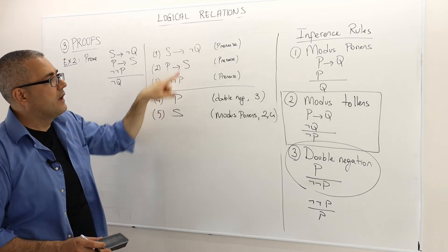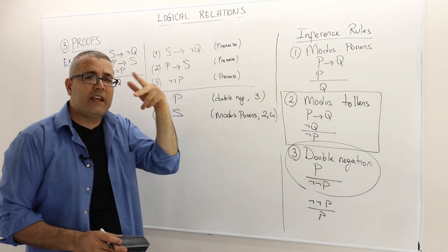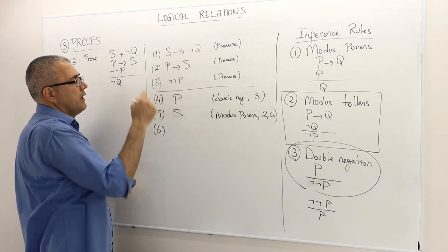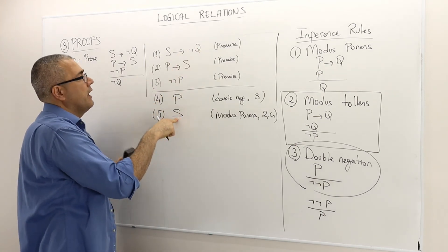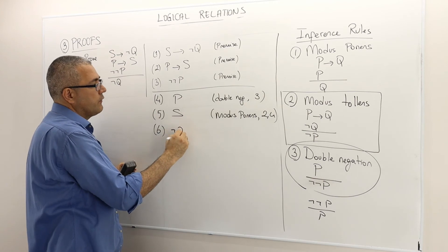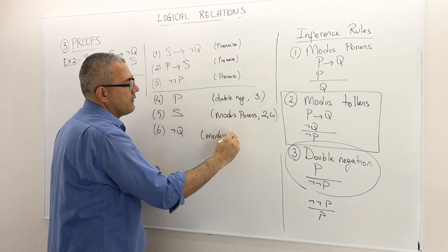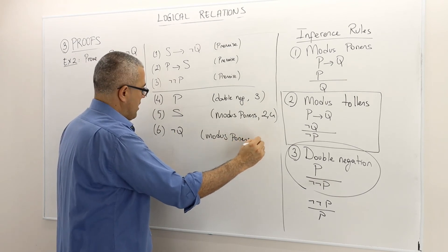So, S implies not Q, S, so I can use the modus ponens again. And so because S implies not Q, correct, true, S is true, therefore not Q must be true, and this is thanks to modus ponens of the arguments 1 and 5.